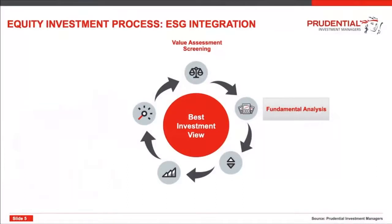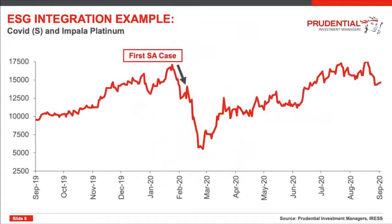Let's look at Impala Platinum as a recent example — this speaks to step two of the investment process, arguably the heart of the decision-making. Walking into the pandemic with Impala, we knew there were structural factors occurring around demand and supply — namely the long-term threat of fewer internal combustion engines requiring PGM-based catalytic converters, with producers responding on the supply side. Those factors were exacerbated by COVID.